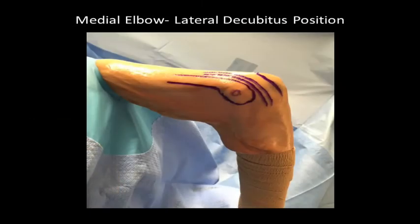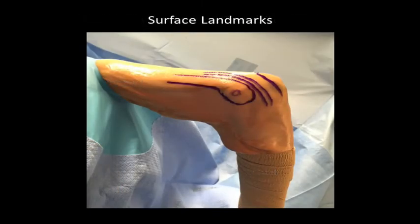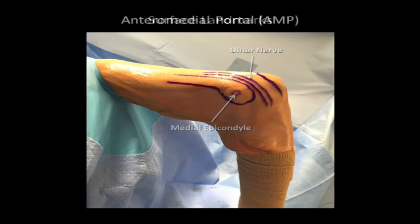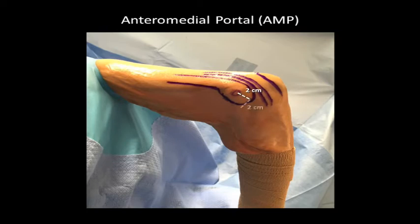On the medial side of the elbow, key surface landmarks to know include the medial epicondyle and ulnar nerve. We'll begin with the anteromedial portal, which is located two centimeters distal and two centimeters anterior to the medial epicondyle.